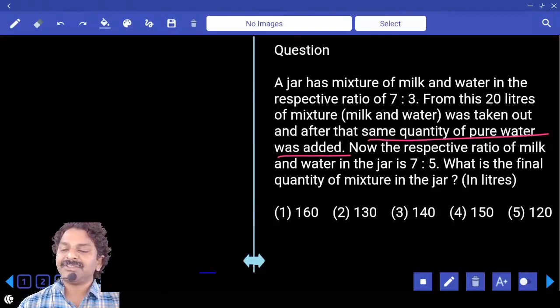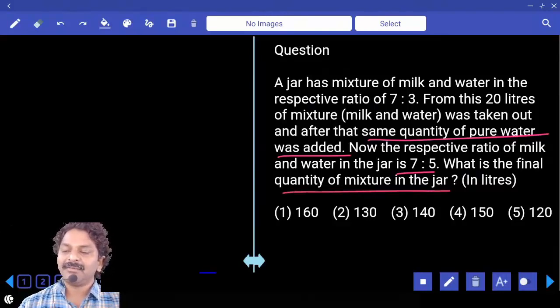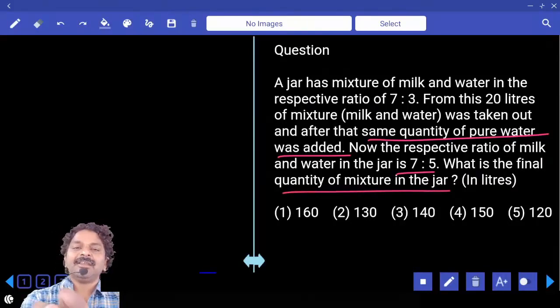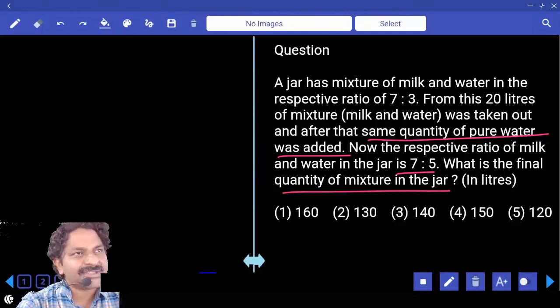Now the respective ratio of milk and water in the jar is 7:5. What is the final quantity of mixture in the jar? Now, whether it is final quantity or the initial quantity...